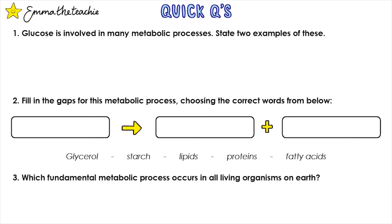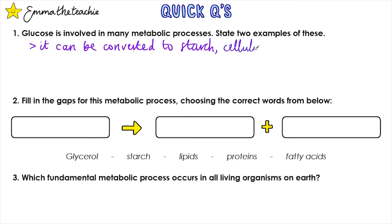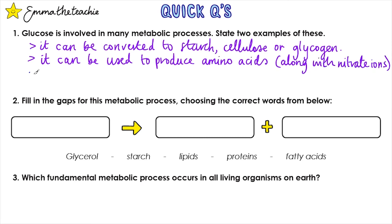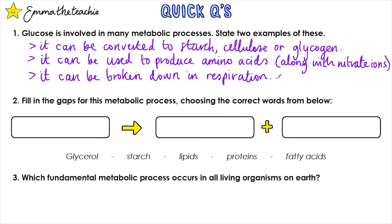Let's test what you've learned. Pause the video and try these quick questions, then press play to go through the answers. Question 1: Glucose is involved in many metabolic processes — state two examples. There are three: it can be converted into starch, cellulose, or glycogen; it can be used to produce amino acids along with nitrate ions; and it can be broken down in respiration to transfer energy for the cell.